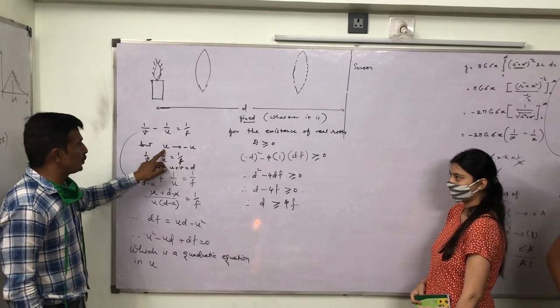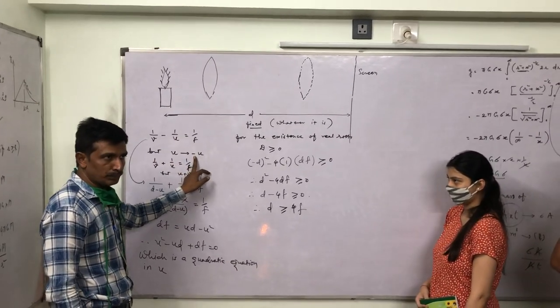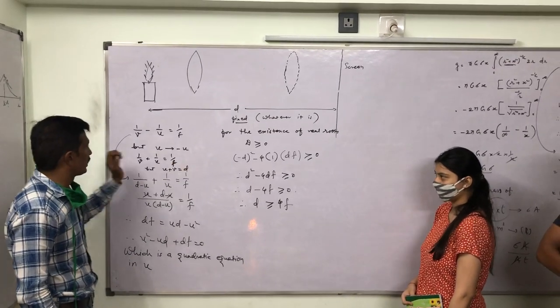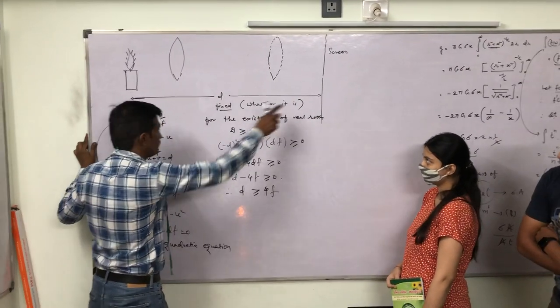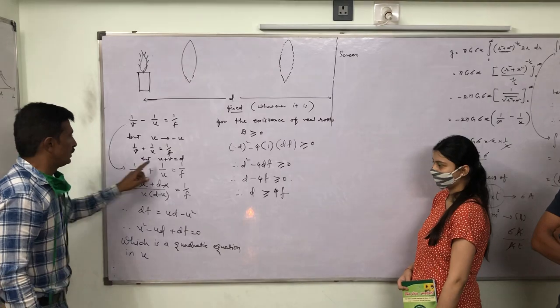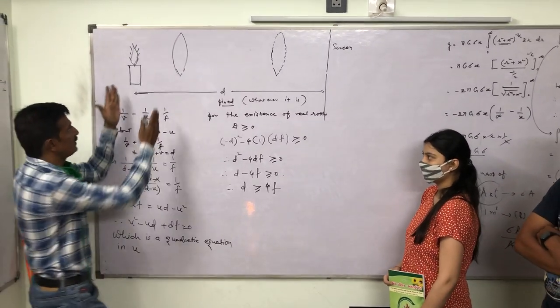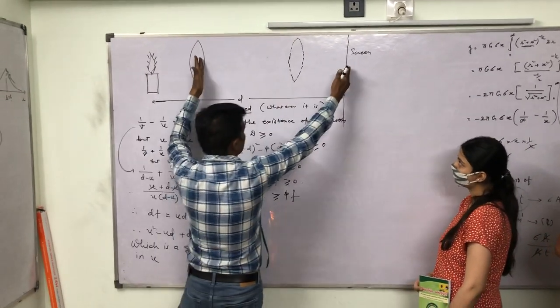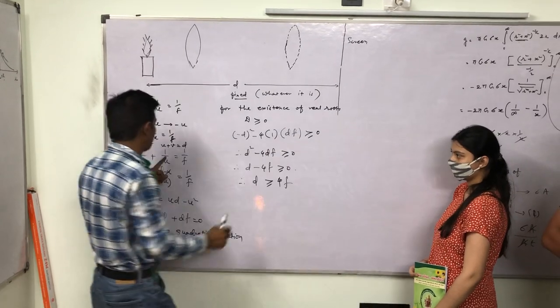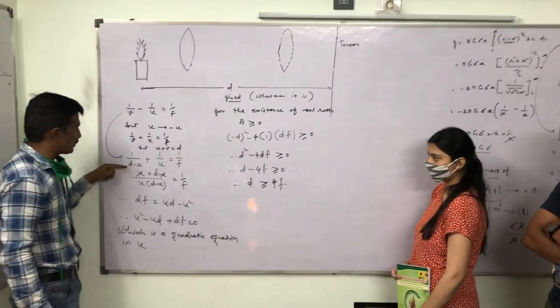But in our case, U is -U. Actually, U is always negative. V is positive, and F is also positive. Here, U plus V—this one is U and this one is V—so U + V = D. It is fixed here, so V is replaced by D - U.